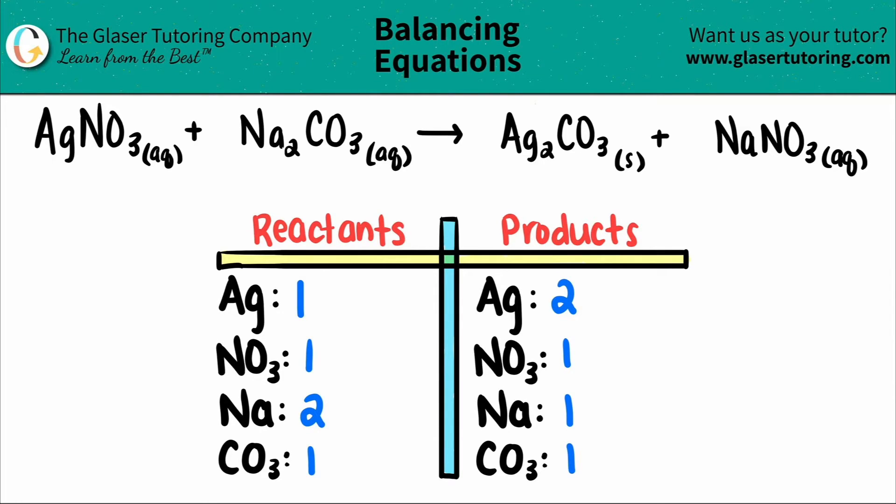It doesn't matter which one you balance first. Pick the one that's easiest for you. I'm going to go with the silver, the Ag. You always bring the lowest number to the highest number by multiplication. One times what will get you to two? One times two.